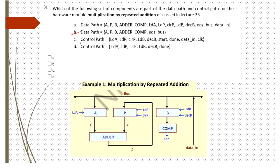The control path for this multiplication data path unit consists of signals: load_a, load_b, clear_p, start, done, data_in, and clock. These are all the signals that come under the control path. That's why B and C can be the answers for this question.